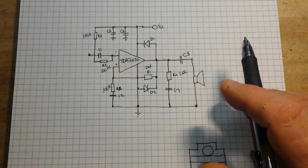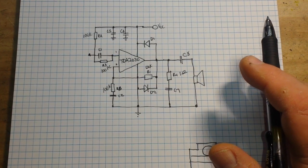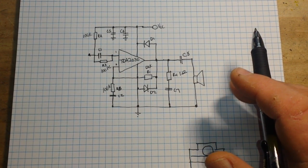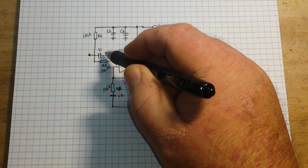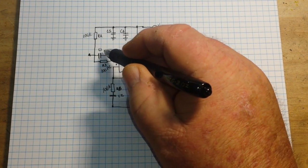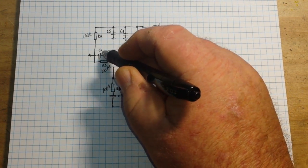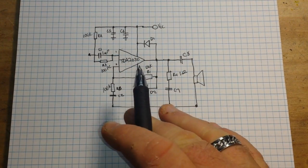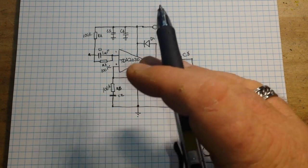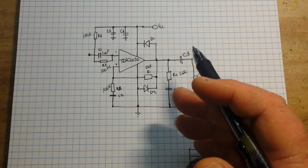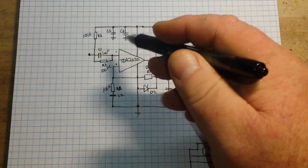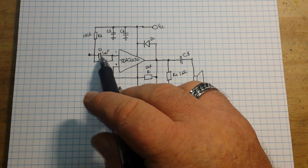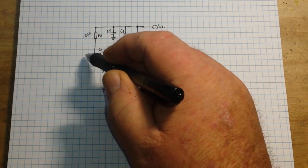All right, let's talk capacitors then. Capacitor C1 right here is going to be one microfarad, and that's going to be our input DC decoupling. So this is just to decouple any DC that's coming in on our input. This is our input right here.